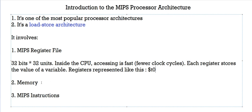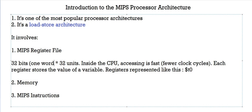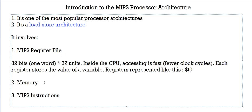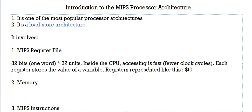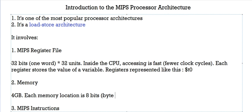One more thing: 32 bits means one word. Next, let's go to the memory. The memory associated with the MIPS architecture is 4 GB, and each memory location is 8 bits. In the register file, each location is 32 bits, which means it's word addressable. In memory, each location is 8 bits, which means it's byte addressable. To access memory, you need a greater number of clock cycles — more time — because memory is external, like RAM, which is not inside the CPU.